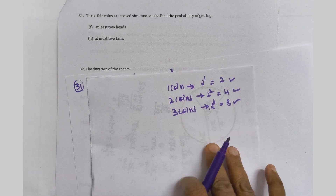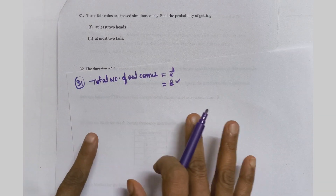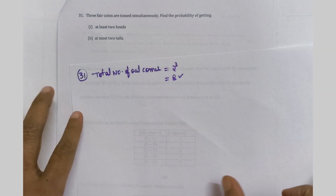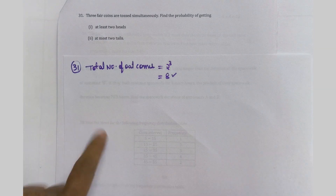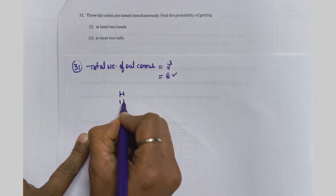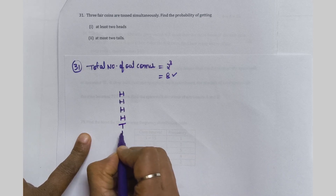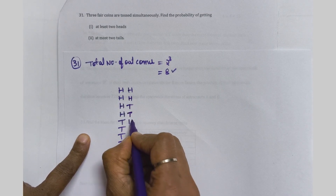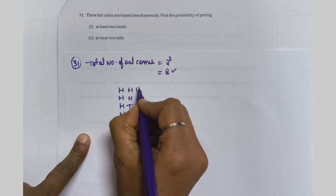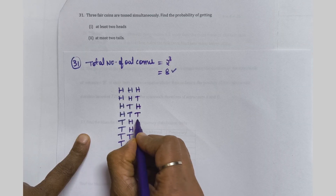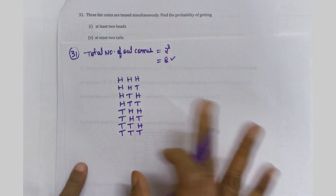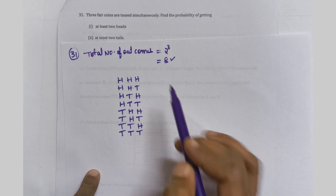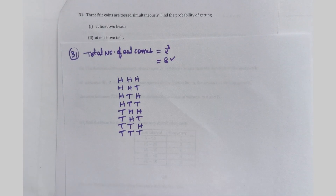For 3 coins tossed there are 8 outcomes. Here is the technique to write all 8 outcomes: first write 4 heads, then 4 tails. Next column: 2 heads, 2 tails, 2 heads, 2 tails. Final column: head, tail, head, tail, head, tail, head, tail. This is the technique for writing all 8 outcomes when 3 coins are tossed.